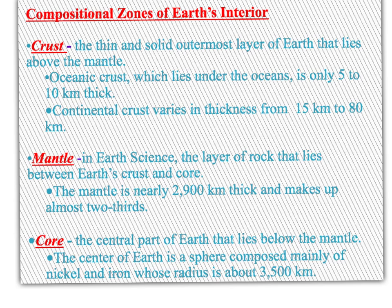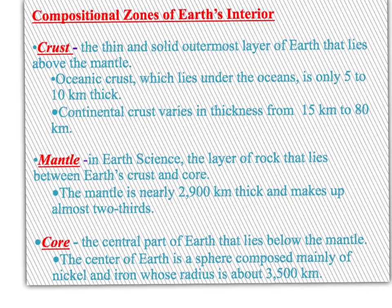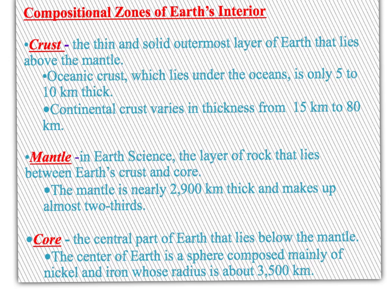As we go down under the surface through those 12,756 kilometers, we divide the Earth into three compositional zones. The first is the crust — that thin outermost layer we interact with the most. There are two types of crust: oceanic crust, which is under the oceans and is 5 to 10 kilometers thick, and continental crust, which is what the continents sit on. Oceanic crust is thinner than continental crust.